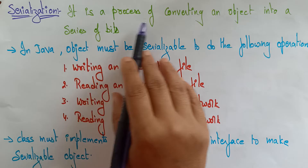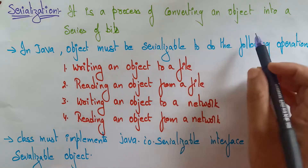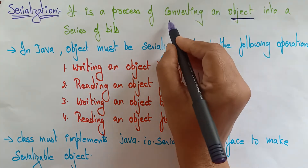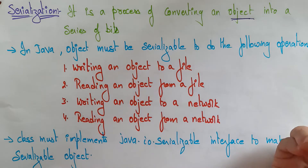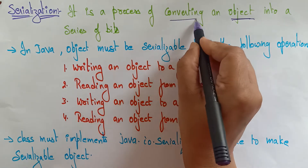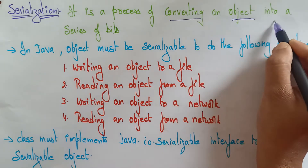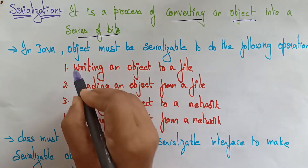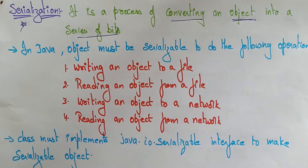Serialization is a process of converting an object into a series of bits. I am going to write a program for converting an object into a series of bits. That concept you call it as serialization.